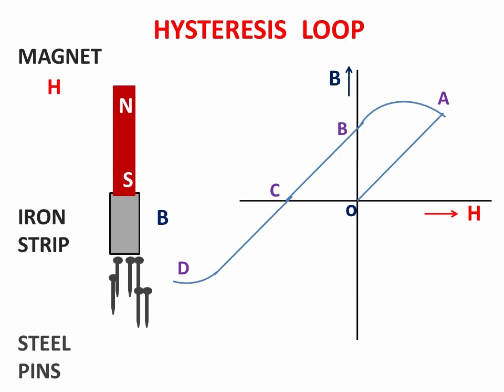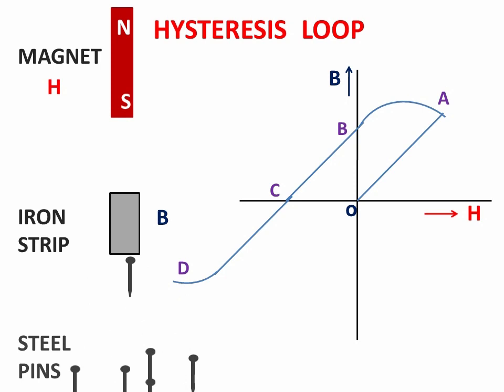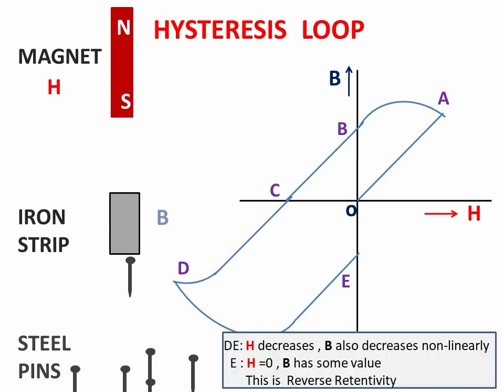Now the bar magnet moves away from the iron strip. The pins detach from the strip except only one, meaning the iron strip retains a small amount of induced magnetic field in itself. This is represented in the BH curve as point E. As the external magnetic field decreases in the reverse direction, B also decreases but not linearly. In the absence of the external magnetic field H, B still has some value. This is called reverse retentivity.